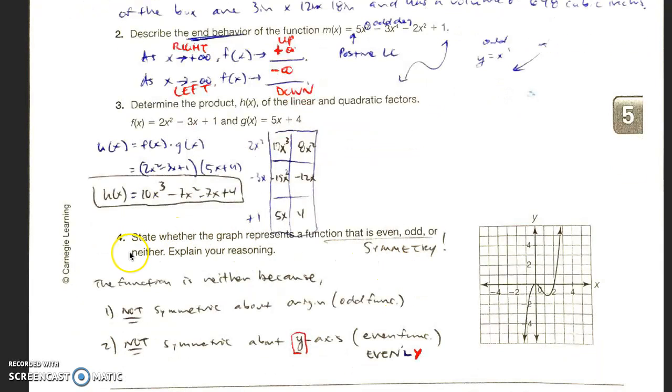And then question number 4, state whether the graph represents a function that is even, odd, or neither. Explain your reasoning. Notice how in here it does not mention the word degree. So if it doesn't mention the word degree, then it's talking about its symmetry and it has a graph here.